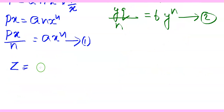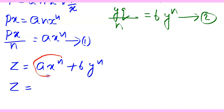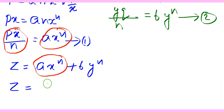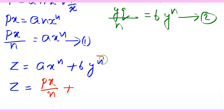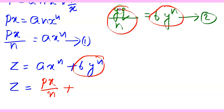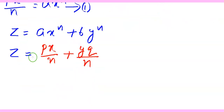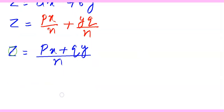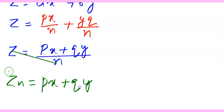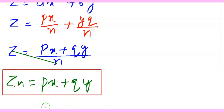The given equation is z = ax^n + by^n. Replacing ax^n with px/n (from equation 1) and by^n with yq/n (from equation 2), we get z = (px + qy)/n. On cross multiplying, nz = px + qy. The arbitrary constants a and b are now eliminated. Therefore, the required partial differential equation is nz = px + qy.